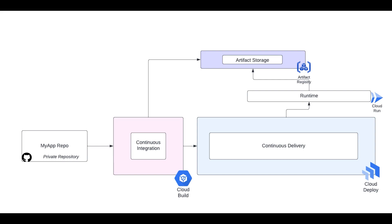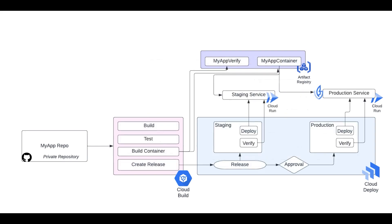We will use Cloud Build for our continuous integration solution, which will create images in Artifact Registry. These will be deployed by Cloud Deploy, our continuous delivery solution, into Cloud Run. Zooming in a bit, we have Cloud Build connected to a private GitHub repository, and configured to lint, build, and test our application on every merge to main. Then it will package up the application using Docker, upload it to Artifact Registry, and create a release for it in Cloud Deploy. From there, Cloud Deploy will automatically deploy the application to the staging environment, and then run post-deployment verification jobs, which will ensure that our application is behaving as we expect in a production-like environment.